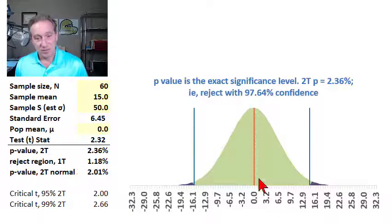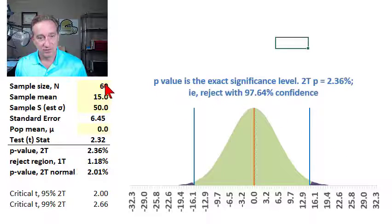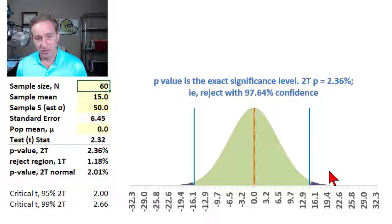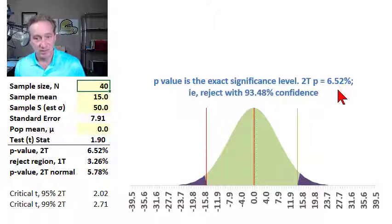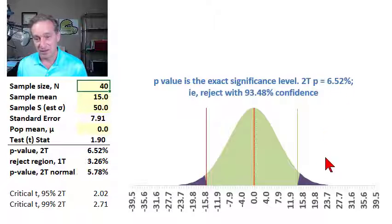And so, this spreadsheet, which I'll upload, is dynamic, and you can see, for example, if we were to decrease the sample size to 40, then the standard error increases, and the p-value, the two-sided p-value, increases to 6.52%.